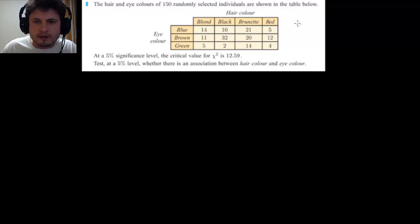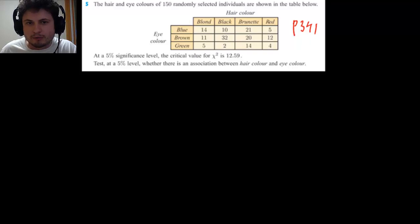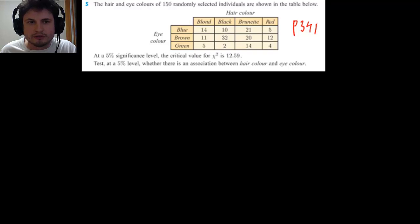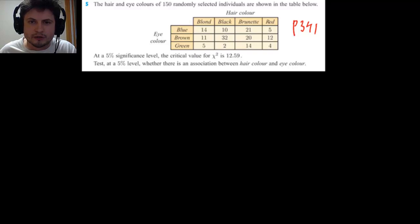This is problem five from page 341 in your book. It's a pretty good problem because it includes a bigger table, a significance level, and chi-square. The hair and eye colors of 150 randomly selected individuals are shown in the table below.